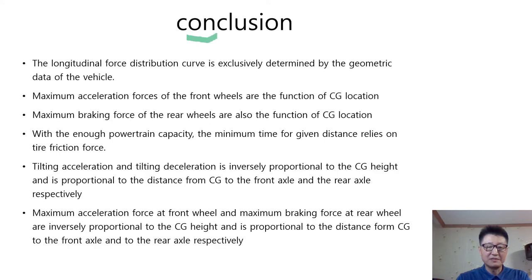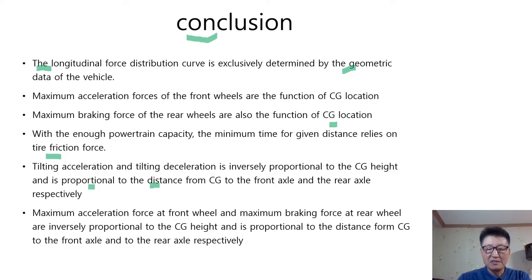Here is the conclusion. The longitudinal force distribution curve is exclusively determined by the geometric data of the vehicle. The maximum acceleration forces of the front wheels are a function of CG location. Maximum braking force of the rear wheels is also a function of CG location. With enough powertrain capacity, the minimum time for a given distance relies on tire friction force. Tilting acceleration and tilting deceleration are inversely proportional to CG height, and proportional to the distance from CG to the front axle and rear axle respectively.